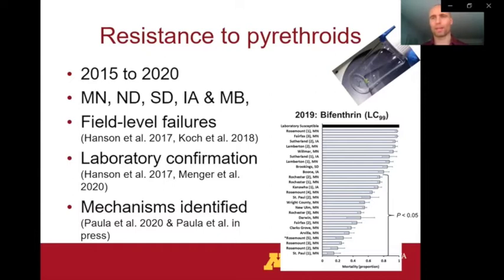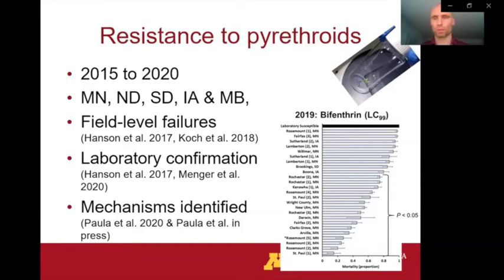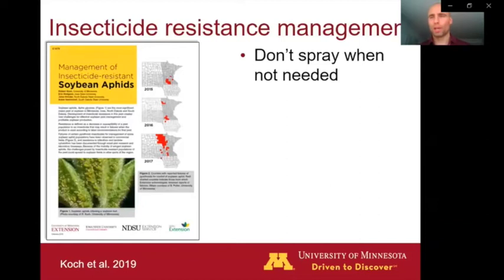We've found that detoxification enzymes are important in the resistant aphids, and also that they've got mutations in certain sites within their nervous system where the insecticide molecules are supposed to bind. But because of those mutations, the insecticides can no longer attach and do their thing. So because of this resistance, I wanted to highlight insecticide resistance management for the soybean aphid.